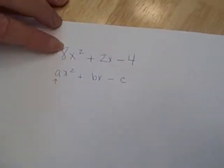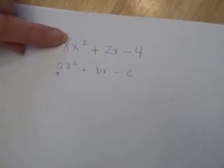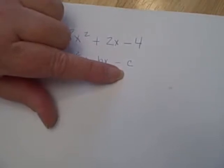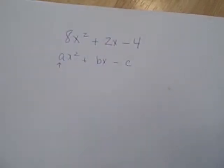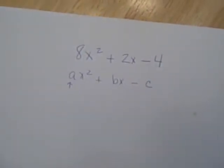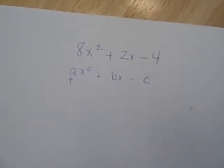So our a, our number times x squared is 8, our b, our number times x is 2, and c, our constant number is 4.